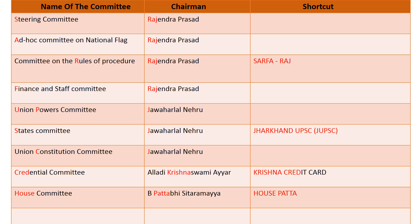Next: Union Powers Committee, States Committee, and Union Constitution Committee — for these three committees, Jawaharlal Nehru is the chairman. The shortcut is JUPSC, that is Jharkhand Union Public Service Commission. J represents Jawaharlal Nehru, UP represents Union Powers in Union Powers Committee, S represents States Committee, and C represents Union Constitution Committee. So, JUPSC is the shortcut to remember these three committees.